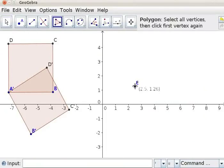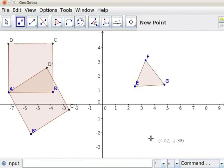Mark point E, F, G. Click on E again to complete a triangle. Click on New Point tool and mark a point H.